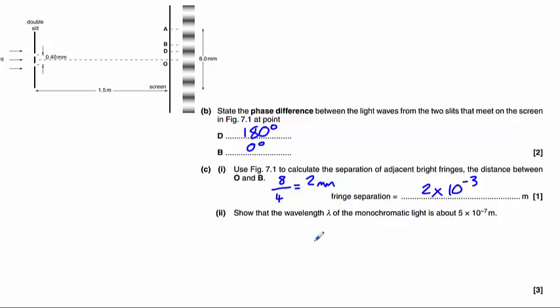And for part 2, show that the wavelength lambda of the monochromatic light is around 5 times 10 to the minus 7 metres. Well, lambda equals Ax divided by D.